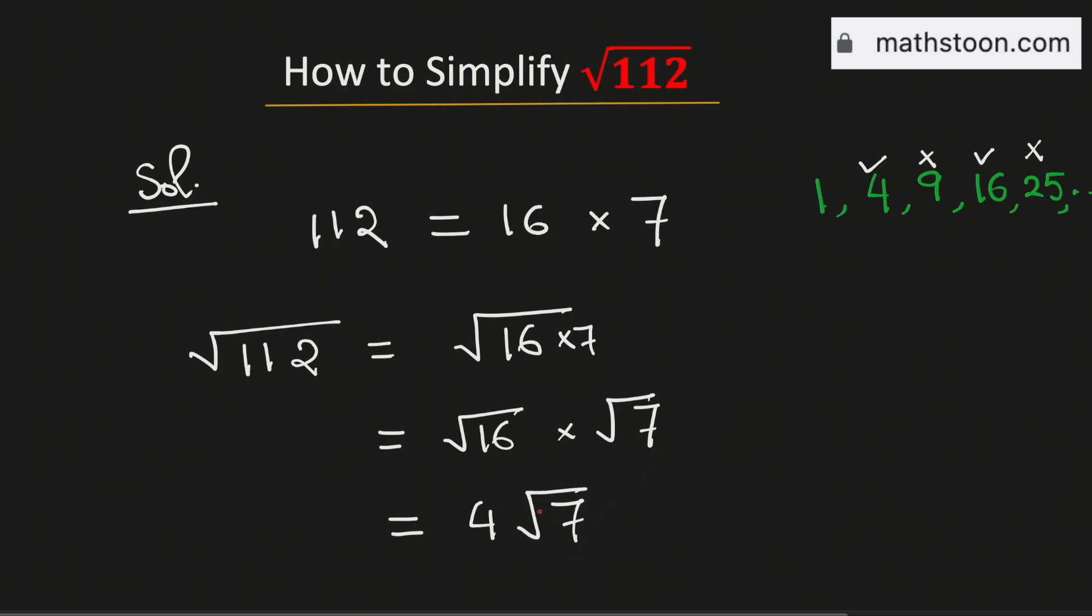So 4 root 7 is the simplification of the square root of 112 and this is our answer.